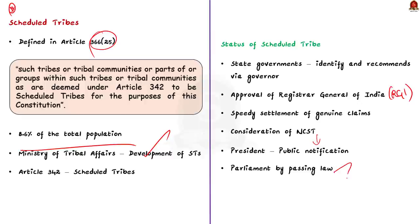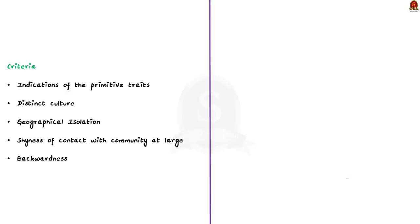Not all communities will be conferred Scheduled Tribe status — there are certain criteria. Firstly, the community should have indications of primitive traits. Then they should have a distinct culture. They should be a geographically isolated community. Apart from this, they should have shyness of contact with the community at large. The final criterion is backwardness. Based on these criteria, assessment for inclusion or exclusion will be made.